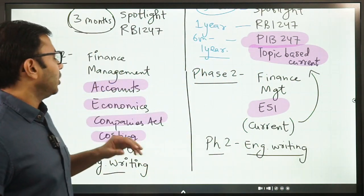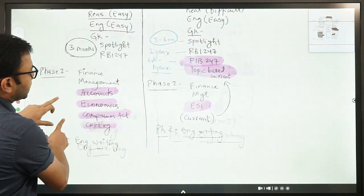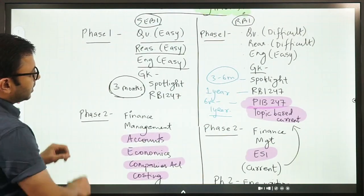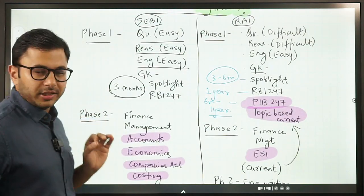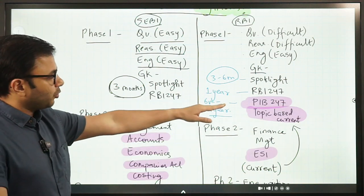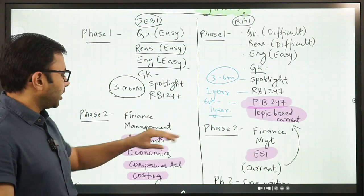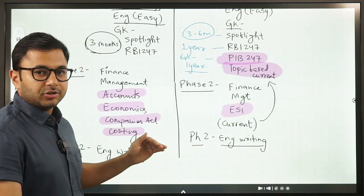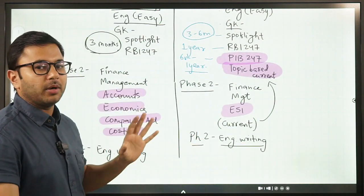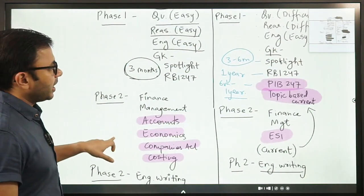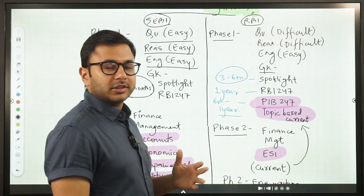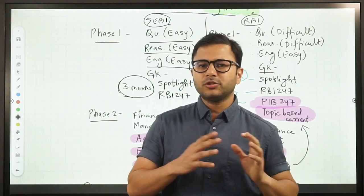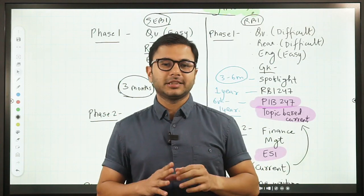So this is the overall comparison of these two exams. Let me make it small so that you can see it and then you can compare it. These are all the differences. PIB 247, topic-wise current affairs, accounts, economics, Companies Act, costing, and ESI. These are the unique areas which you have to cover for each exam. Everything else remains the same. So we can see that 50 to 60% syllabus is the same. 40 to 50% syllabus is unique to both these exams.